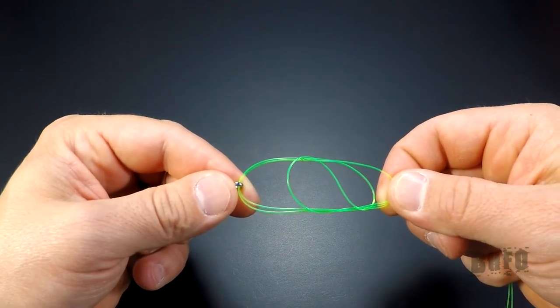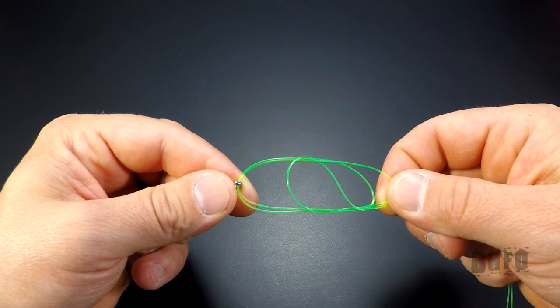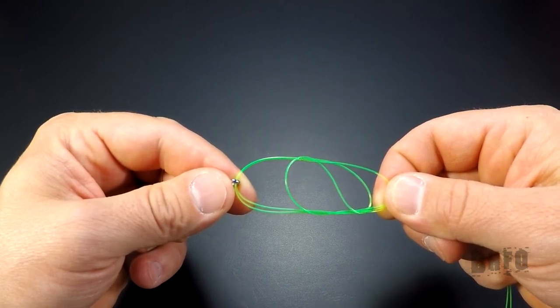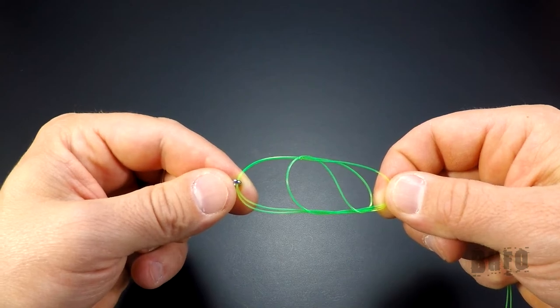Now it's very important when tying fishing knots to lubricate the line before cinching up. The reason is friction could cause line burn and weaken or damage the line, so always lubricate your knots. The best way is to run the knot through your mouth and use saliva.